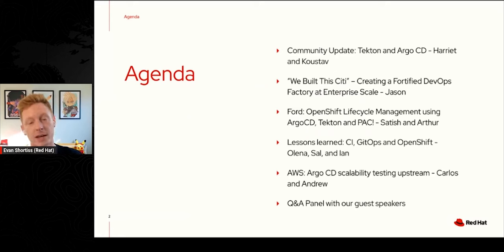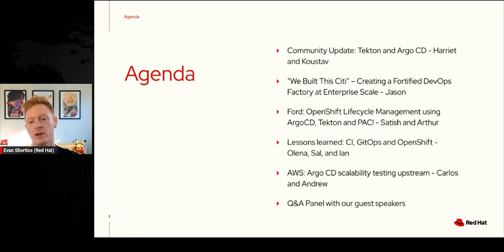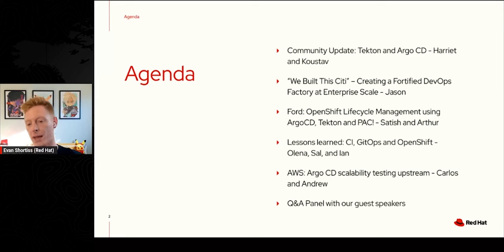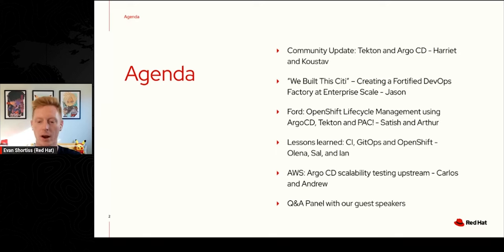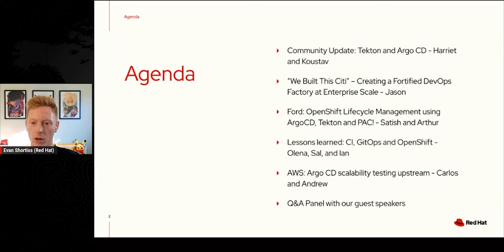On our agenda today: Harriet and Kustav from Red Hat will talk about Tekton and Argo with a community update. We have Citi here to talk about their fortified DevOps factory. Ford will be talking about OpenShift lifecycle management using Tekton, Argo, and PAC. Then lessons learned from Olena, Sal, and Ian on using GitOps and OpenShift. AWS will talk about Argo CD scalability and testing, and finally we'll have a Q&A at the end.